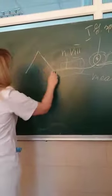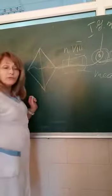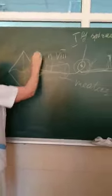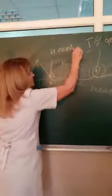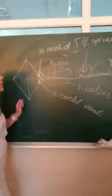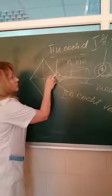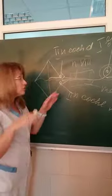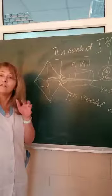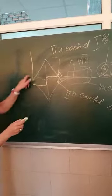Then the fibers run to the rhomboid fossa on the same side. In the rhomboid fossa, these fibers contact two nuclei: the nucleus cochlearis dorsalis and the nucleus cochlearis ventralis. From the nucleus cochlearis ventralis there are second neurons whose fibers run to the surface of the rhomboid fossa up to the midline, then run deeper through the tegmentum of the pons and cross to the opposite side, forming the lemniscus lateralis.